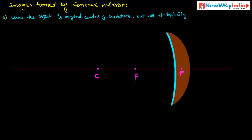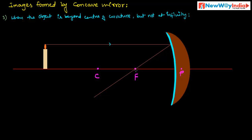The third case is when the object is beyond the center of curvature but not at infinity. If you place an object beyond center of curvature, that means beyond C, the image is placed beyond center of curvature. Draw standard rays: one standard ray passes parallel to the principal axis and strikes the concave mirror. After reflection it passes through the principal focus. Another ray passes through the center of curvature and after reflection passes in the same path. These two rays meet at a point.